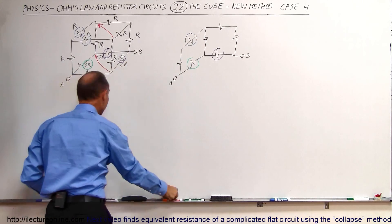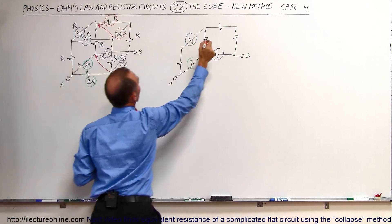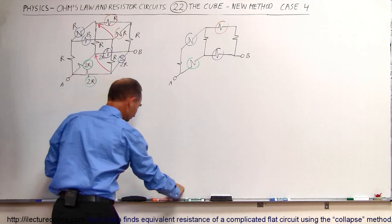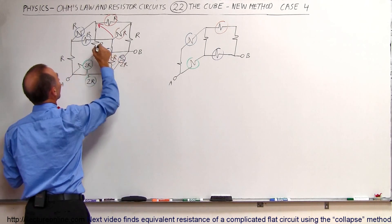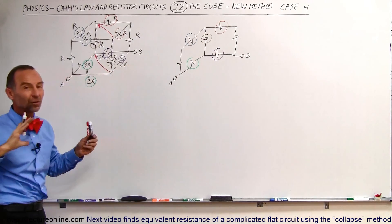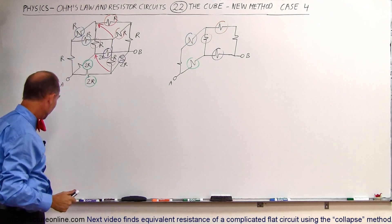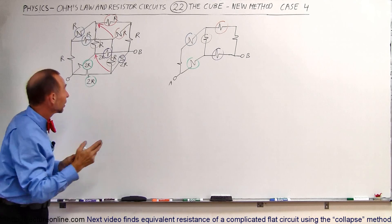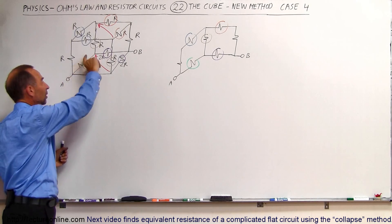We'll combine these two resistors together to form this resistor, and we'll take this and this resistor here and collapse it into that resistor. So that's how the circuit is collapsed. Notice the equivalent resistors — in each case they act as two resistors in parallel, because there will be just as much current coming through one as going through the other due to symmetry.